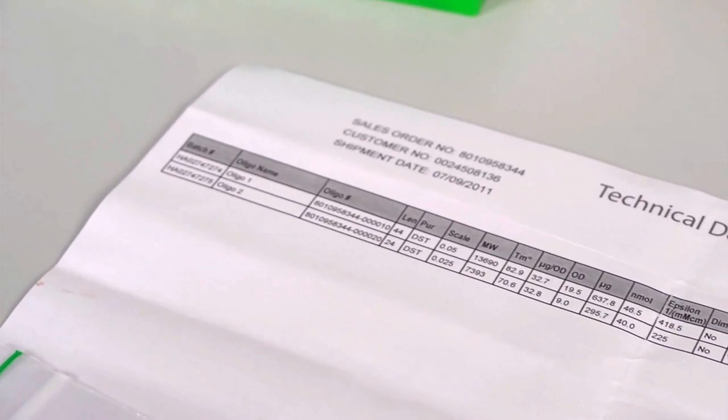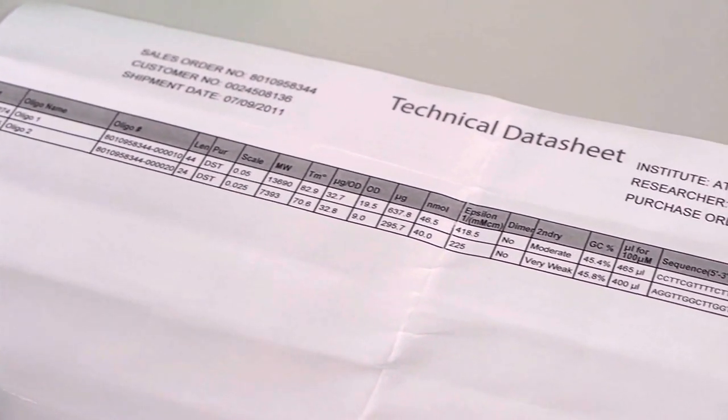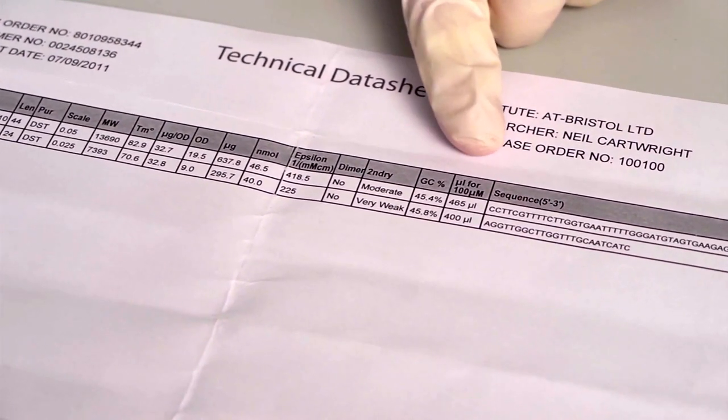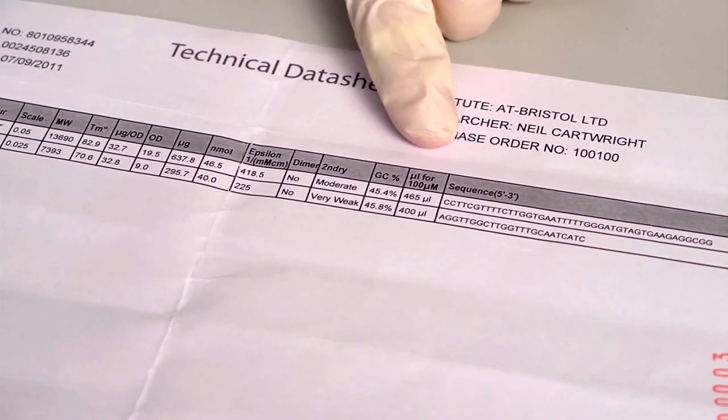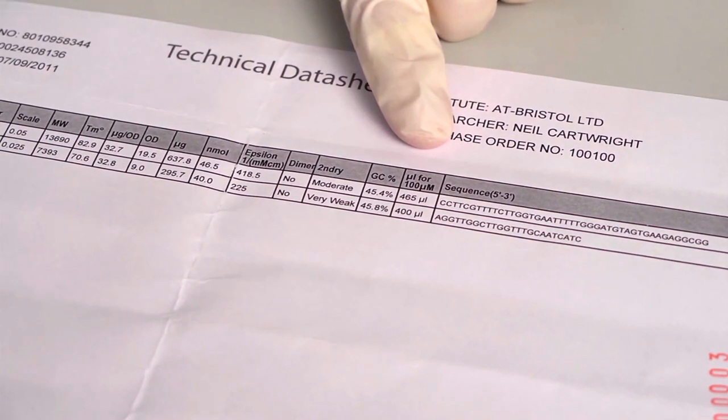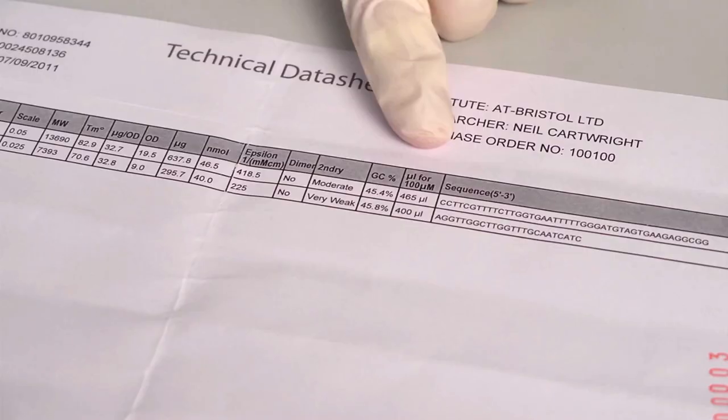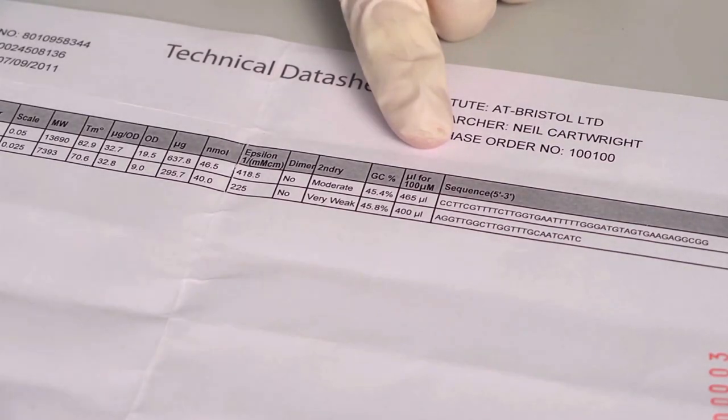Then add the volume required of DNase and RNase free distilled water to obtain a concentration of 100 micromoles per litre. The volume of water required is written in this column, and you should add this volume and nothing else - this will give you a 100 micromolar concentration stock.